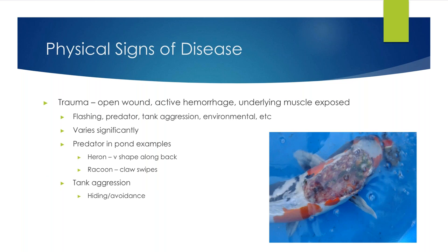Traumatic injury occurs very quickly and is usually a fairly significant event — an open wound or active hemorrhage with the underlying muscle exposed. This can occur from very aggressive flashing, something significantly pointy in your tank or pond, or predator attacks. It can also occur between fish in the same tank if they are very aggressive to each other. Environmentally, if you have a system that is not fish-friendly — very shallow, with lots of plants and ornamentals getting in the way — traumatic injuries can vary very significantly in their presentation. Most commonly we see traumatic attacks from predators in outdoor ponds.